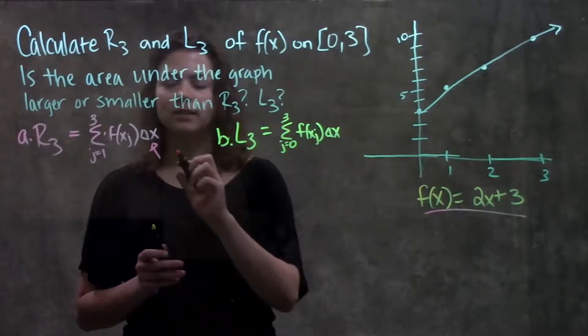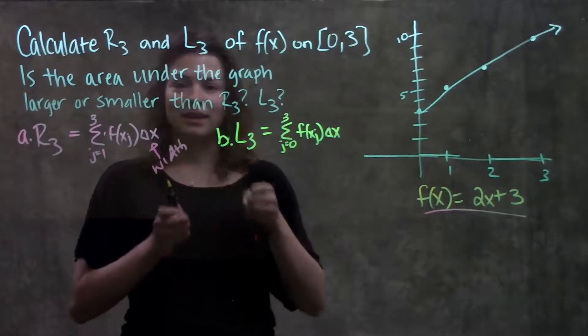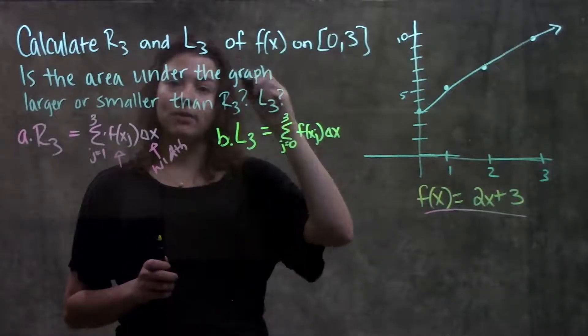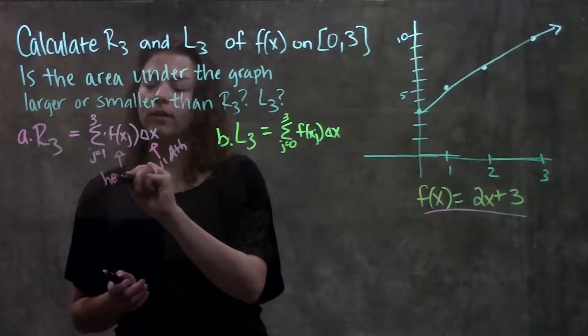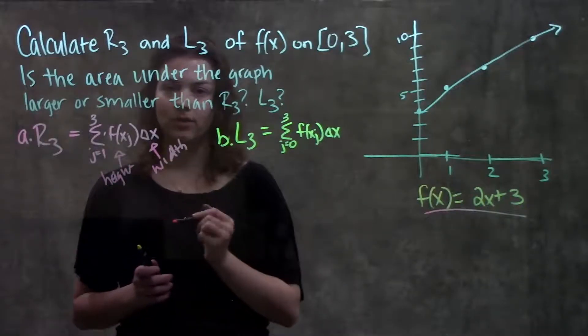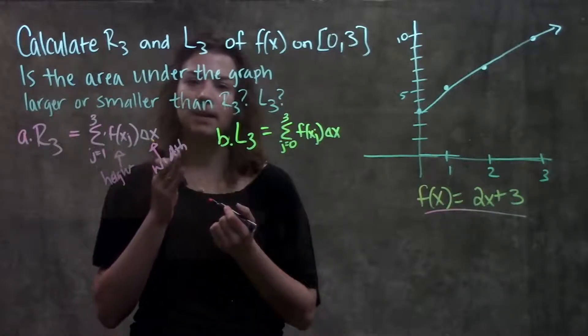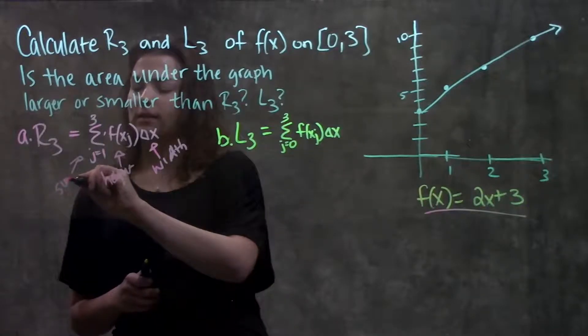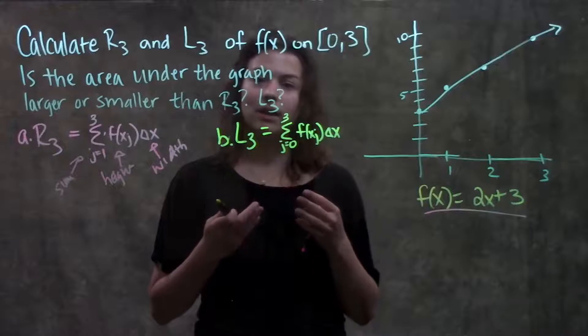Delta x is just the width of each rectangle, just how wide it is. The f(x sub j) is just whatever the y value is at each of our x values, in other words, whatever the height of our rectangle is, because remember to calculate area of a rectangle you multiply height by width. And this fancy squiggle just means summation. So add the area of each of our rectangles together and that'll give us our estimate.